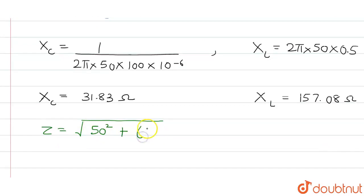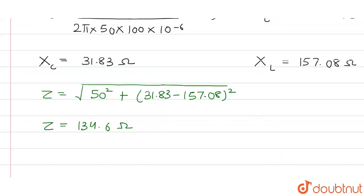Plus X_C that is 31.83 minus X_L which is 157.08 whole squared. Now on solving this we will get Z, that is impedance, as 134.6 ohms. Now we can proceed to find the RMS value of the current.